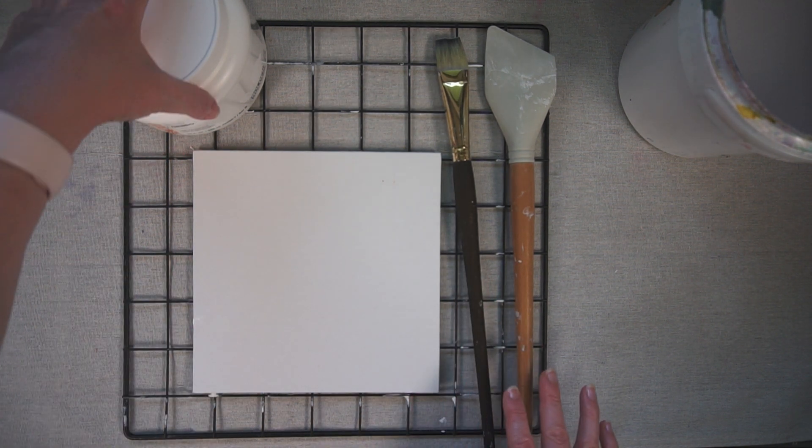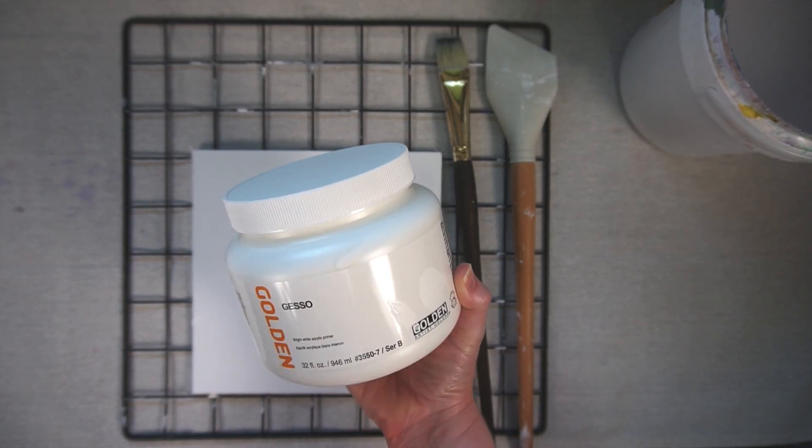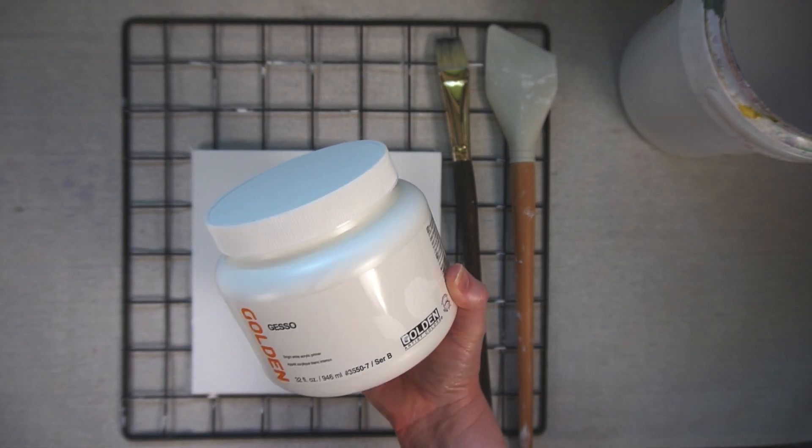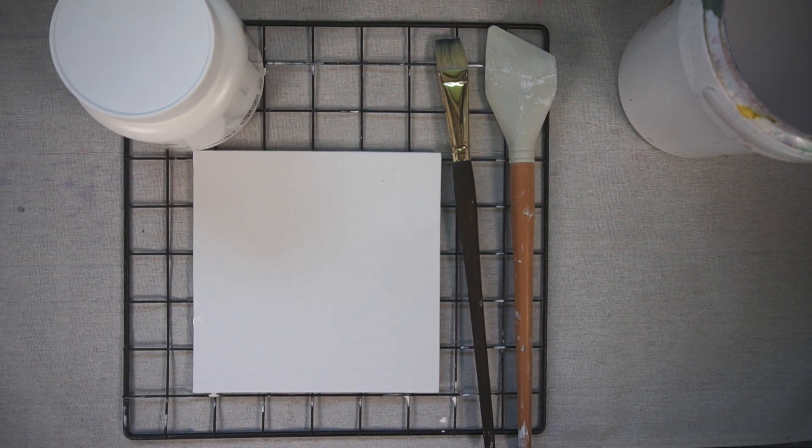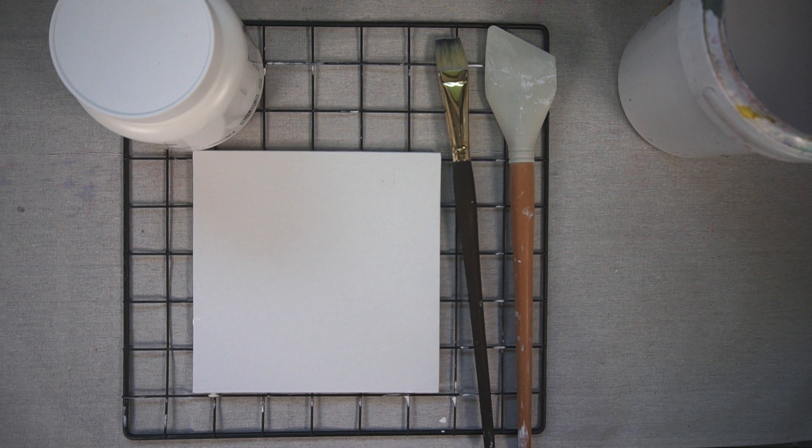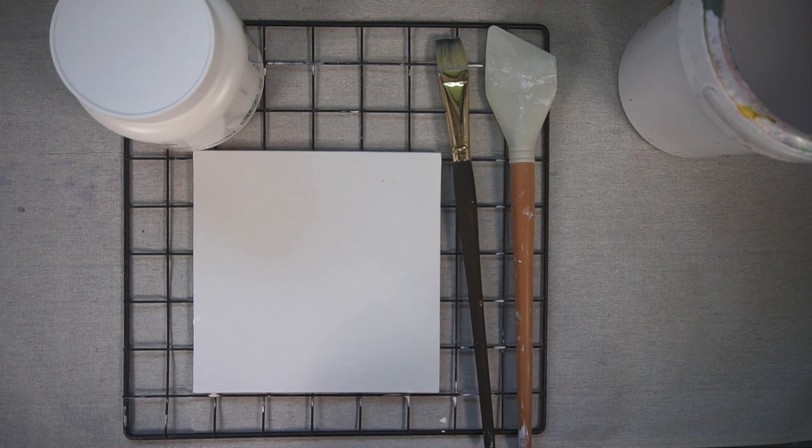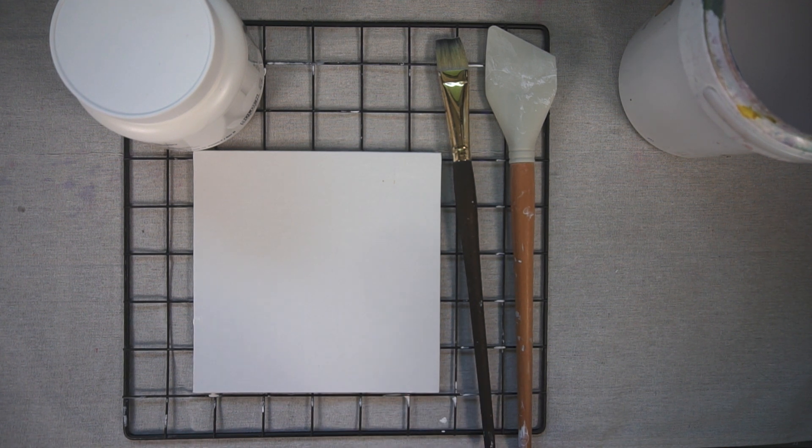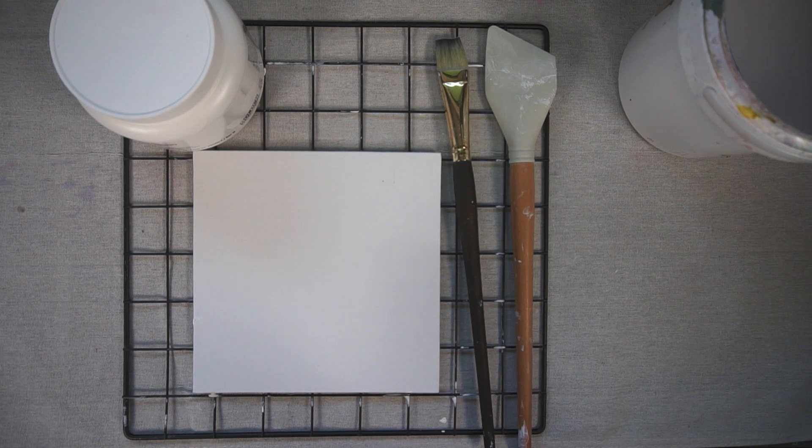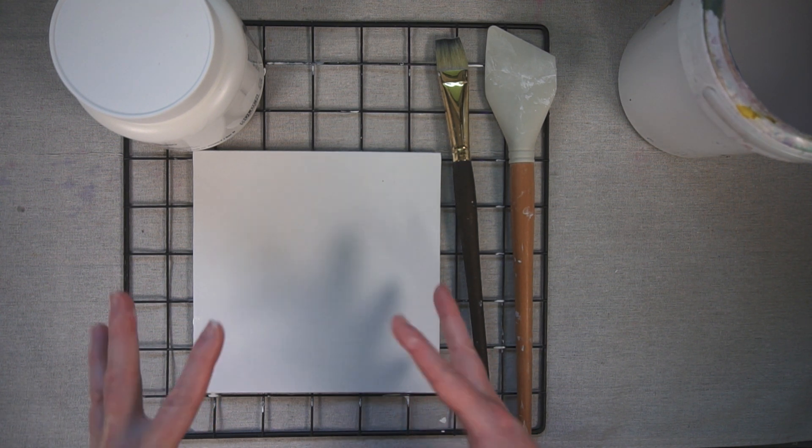If you don't know anything about gesso, I'll show you my container. This is a container of Golden brand gesso, it works really well. Gesso is basically like a paint primer. If you're painting your house you put a primer on, if you're painting some artwork you put gesso on.